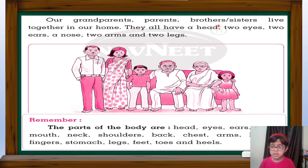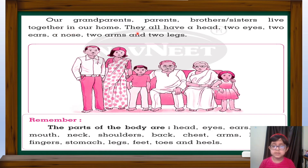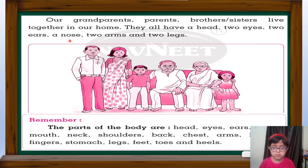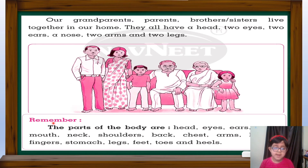Our grandparents, parents, brothers or sisters live together in our home. They all have a head, two eyes, two ears, a nose, two arms and two legs.